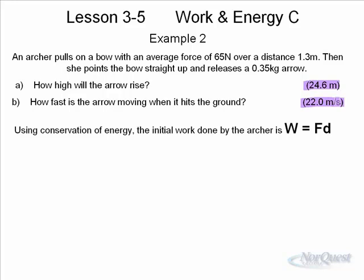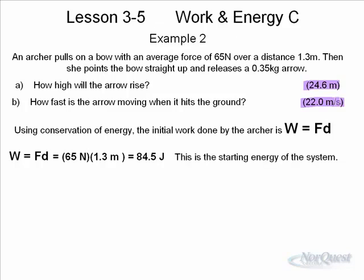Using conservation of energy, the initial work done by the archer is Fd, because she's applying a force over a distance, and that's giving the bow and arrow system elastic potential. The work that she's doing is 65 newtons times 1.3 meters. She's got 84.5 joules. If we assume that this is an ideal system, then this is the starting energy of the system. In question A, when we ask how high will the arrow rise, you have to remember that if the arrow starts at ground level, if the arrow starts at the bottom and it has 84.5 joules, what's going to happen as it rises?